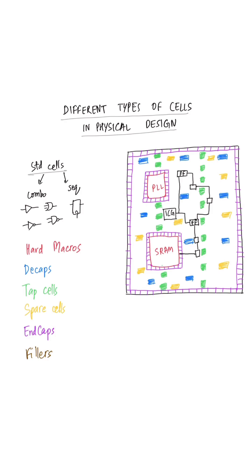So the first and foremost are the standard cells, which consist of the combinational cells like buffers, inverters, OR gates, NAND gates, multiplexers, etc., as well as sequential cells like flip-flops.